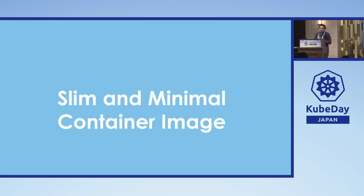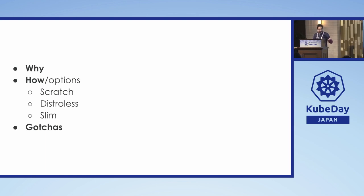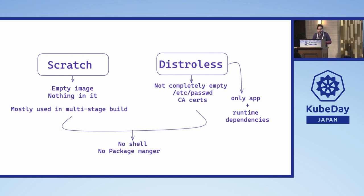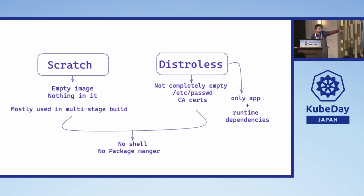Over time we have moved to wanting slimmer images — images which contain less, so we have fewer vulnerabilities and smaller image sizes. There are three concepts: scratch, distroless, and slim. A scratch image is basically an empty image — nothing in it. It's used to run binaries with no linked dependencies, mostly Go or Rust. It's a compiled binary with no dependencies, and if it has dependencies you have to know all linked dependencies manually — it doesn't even have ca-certs or /etc/passwd.